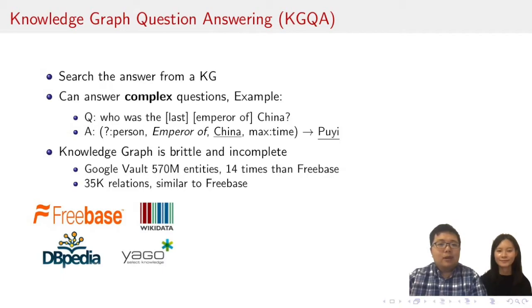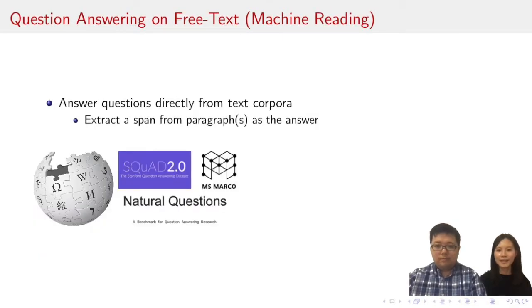However, existing knowledge graphs are brittle and incomplete. They have tons of entities, but the relations are very sparse. And getting more relation data is expensive. For example, Google's knowledge board has 570 million entities, 14 times more than Freebase, but only has 35k relation types. This is similar to Freebase. While you can get the birthday and title of Puyi, you are not going to find more complex relations. It's this kind of unexpected information or language that can break knowledge graph question answering approaches.